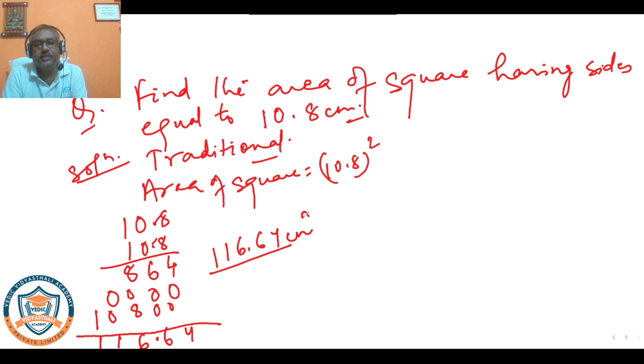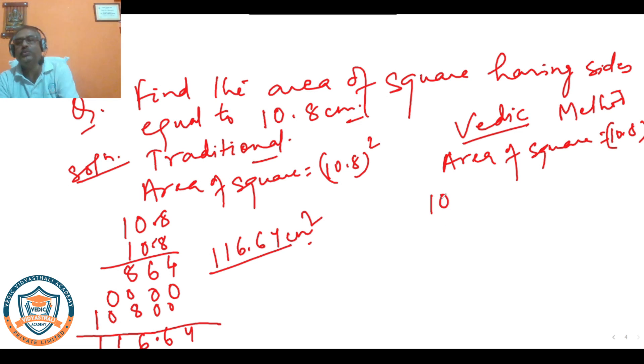The same question can be solved by Vedic method, and Vedic method is going to take very less time. We have to find area of square, same thing 10.8 whole square. Here square can be found by using Yavadunam method.